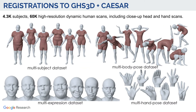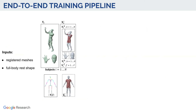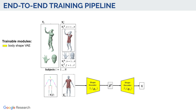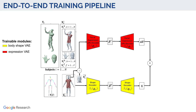To learn the model components from our large collections of human scans, and to capture correlations and ensure compatibility between various body components, we register all scans and simultaneously train all model parameters in a single consistent learning loop. Our training relies on an end-to-end shape reconstruction pipeline. The inputs are registrations to all scans and also full-body rest shapes estimated for each subject. We represent the full-body shape at rest using deep variational autoencoders, and we extract facial expressions from close-up head captures and train a facial expression VAE for them. Pose-based deformations are applied on top of the rest shape.